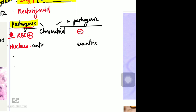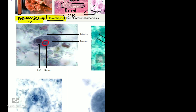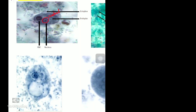There are various amoeba — some pathogenic, some non-pathogenic. Morphologically, we can distinguish pathogenic from non-pathogenic using two features: the ability to phagocytose RBCs (erythrophagocytosis), and the presence of a central nucleus. In the image, a central nucleus indicates pathogenic, whereas an eccentric nucleus indicates non-pathogenic.